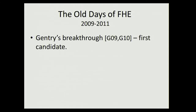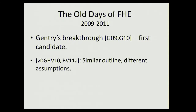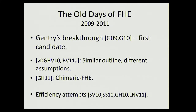Starting with the old days—and the old days are 2009 to 2011, really ancient history—Gentry showed the first candidate fully homomorphic scheme in 2009 and provided a blueprint for achieving FHE. Follow-up work instantiated building blocks under different assumptions. Gentry and Halevi's chimeric FHE showed how to remove one of those building blocks but at the cost of greatly complicating the scheme. Additional work focused on making things more efficient and closer to real-world use.